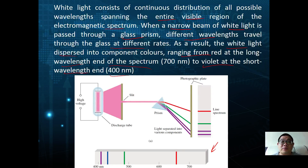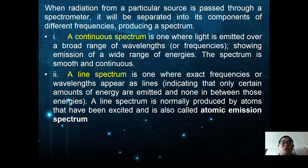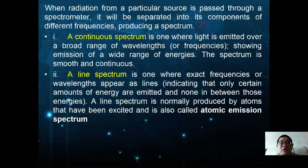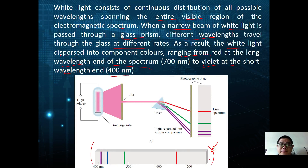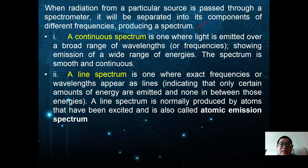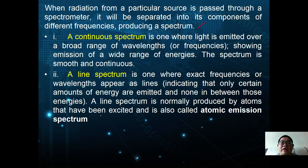When the radiation of a particular source is passed through a spectrometer, it is separated into components of different frequencies, producing a spectrum. A continuous spectrum is one where light is emitted over a broad range of wavelengths or frequencies, showing emission of a wide range of energies — the spectrum is smooth and continuous. A line spectrum, by contrast, shows exact frequencies or wavelengths as lines, indicating that only certain amounts of energy are emitted. Line spectra are normally produced by excited atoms and are also called atomic emission spectra.